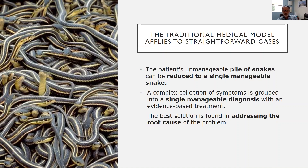The traditional medical model really applies only to straightforward cases. The way the medical model works is that the person's unmanageable pile of snakes is reduced to a single manageable snake — or they have a complex set of symptoms that can be reduced to a single diagnosis with an evidence-based treatment. The goal of the medical model is to address the root cause of the problem, but with complex cases, it's more involved than that.